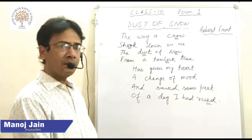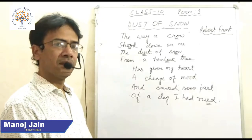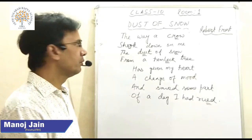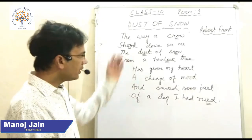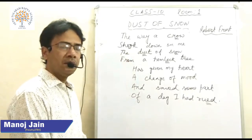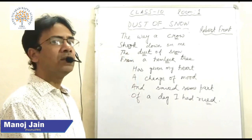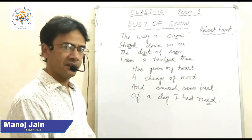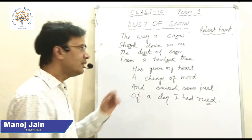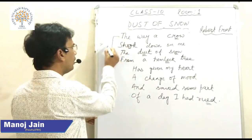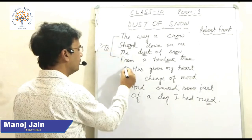Now let us learn the poem Dust of Snow. As you can see, this poem has two stanzas. Each stanza has four lines.